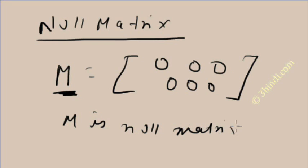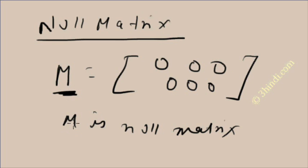How can you determine that M is a NULL MATRIX? The rule is very simple. Any matrix can become a NULL MATRIX if and only if all elements of the matrix are 0. M is a 2 by 3 matrix. Total number of elements is 6, and all elements of this matrix are 0. If all elements are 0, then this type of matrix is called NULL MATRIX.